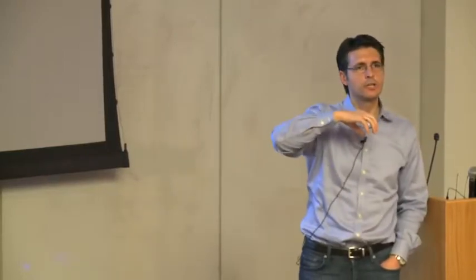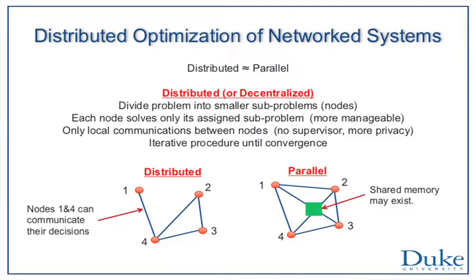There's two ways to accomplish this task. One is to collect all our information in the middle and average it out. Another way is to take this problem and decompose it into smaller subproblems. Now each sensor has its own local utility function, its own constraints, and they need to communicate and run some iterative algorithm to find the average temperature.